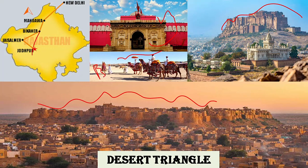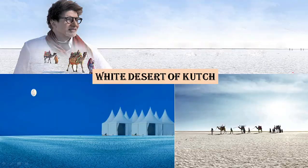In Bikaner there is the Karni Mata Temple, famous for its rats, and the Bikaner Camel Festival. A camel festival in Pushkar is also very famous. Near Jaisalmer, other attractions include Gadisar Lake, various nearby towns, and the haunted village of Kuldhara. Jodhpur and Bikaner also have many other tourist attractions in the Desert Triangle.